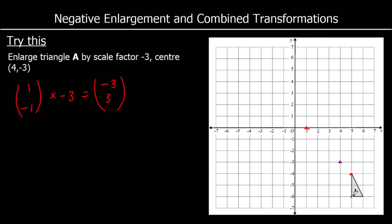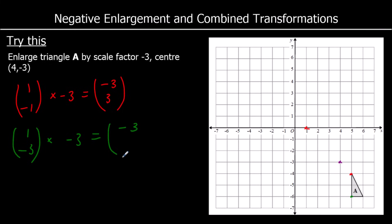I'll take the green point. To get there from the centre, it's right 1, down 3 — so the vector is (1, -3). We're going to multiply that by negative 3. The change in x times negative 3 becomes negative 3, and the change in y: negative 3 times negative 3 is positive 9. So that becomes back 3, up 9 — so that goes to here.